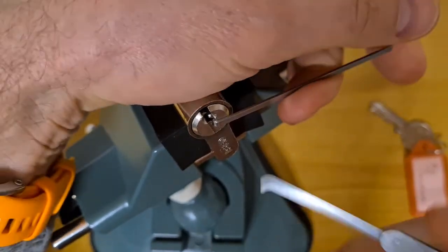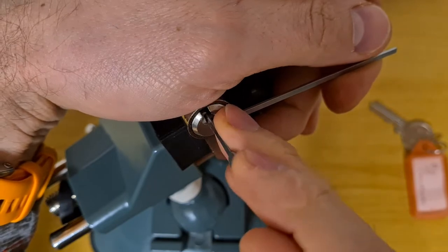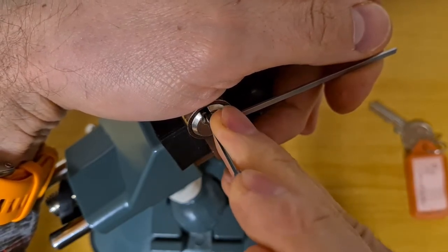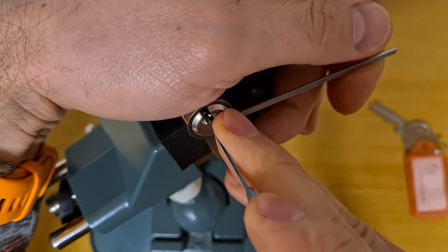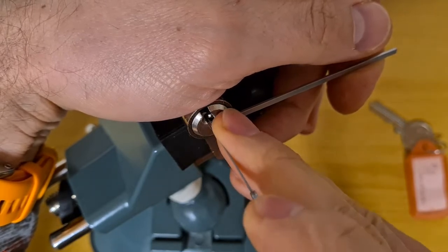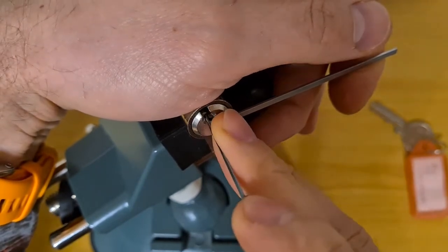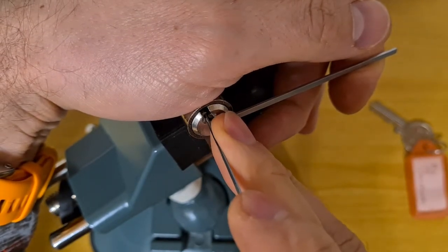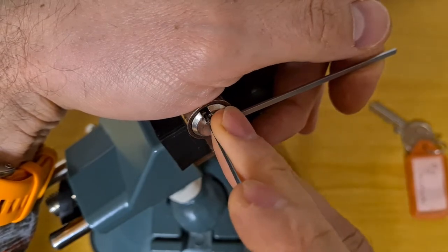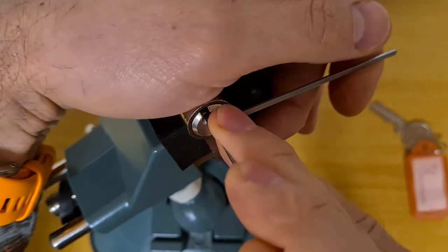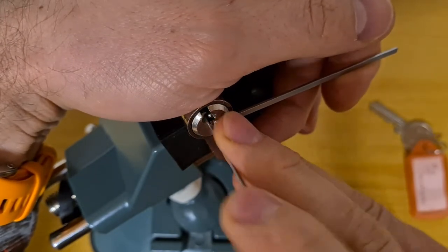So I'll start this direction, then maybe I'll do the other one as well. Pin number one is really deep down. I think it might have been used for this gravity feature. So it could actually be just a four pin lock, but I'm not quite sure.